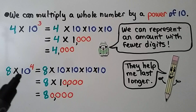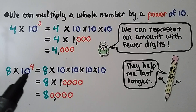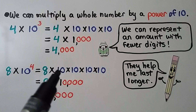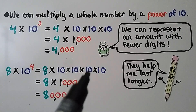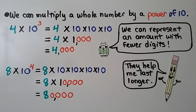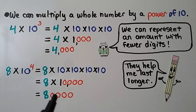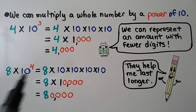Here we have 8 times 10 to the fourth power. We have 8, our whole number, times 10 as a factor 4 times — 10 times 10 times 10 times 10. That would be 8 times 10,000, which equals 80,000. We have 4 zeros because of the exponent 4, and the base is 10.